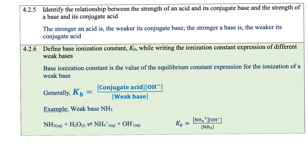In this learning objective, we define the base ionization constant Kb, which is the value of the equilibrium constant expression for the ionization of a weak base. Since it's a weak base, a double-headed arrow is used. The expression keeps the conjugate acid concentration times the hydroxide ion concentration over the concentration of the weak base. For ammonia: Kb = [NH4+][OH-] / [NH3]. H2O as a liquid is not included. Remember, if any coefficient appears next to a reactant or product, its concentration must be raised to that power in the expression.